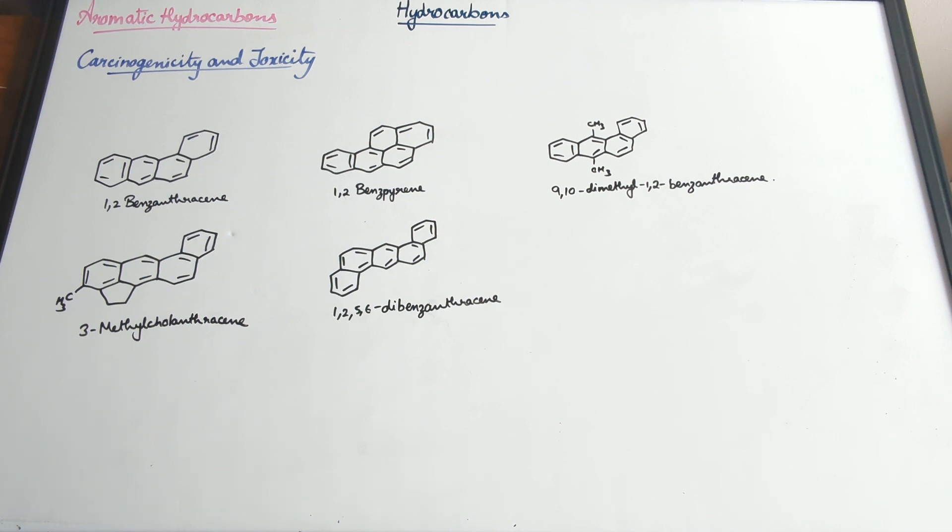We learned how benzene structure was determined. At that point in time, they probably didn't think that such compounds could exist in the first place, and so the structure of the benzene ring was very baffling. Scientists tried to figure out how the structure is. We learned about the Kekulé structure, the stability, the resonance of the benzene ring.